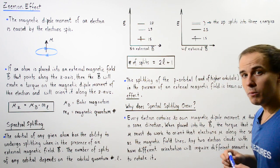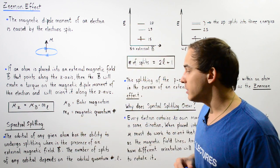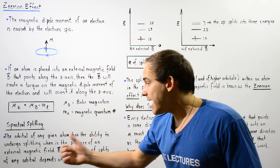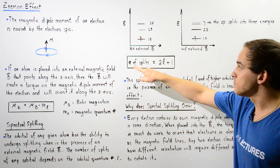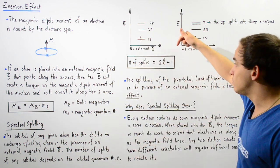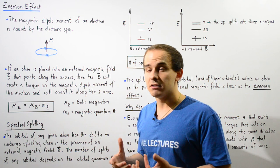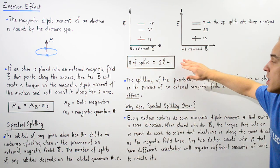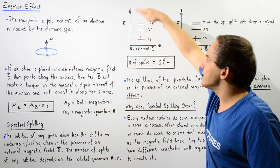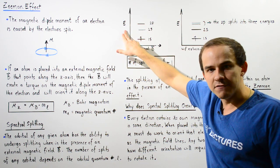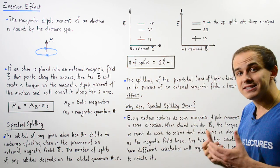Not all orbitals of an atom have the ability to undergo energy splitting. The number of energy splits of any orbital depends on the orbital quantum number L, given by the equation: the number of splits equals 2 multiplied by L plus 1. For example, if we have no external magnetic field B, the y-axis represents energy level, and the 1s orbit has one energy level, the 2s has its own distinct energy level, and the 2p has its own distinct energy level.